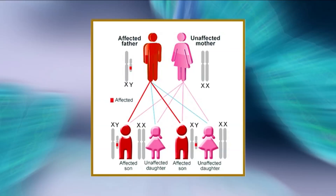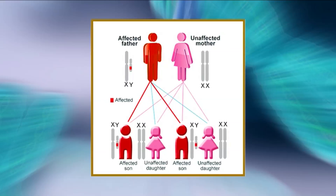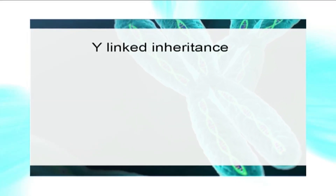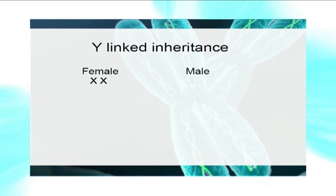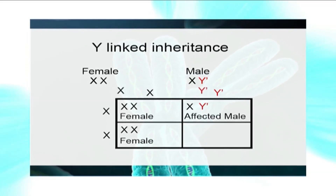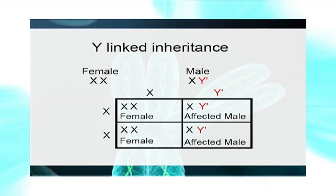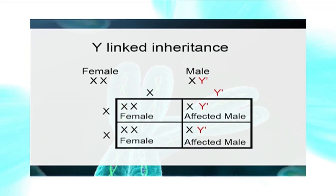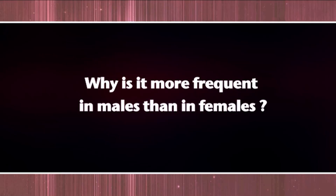Y-linked inheritance passes from father to son since the Y chromosome is always given to male offspring. All sons of an affected father have the trait. Drawing a Punnett square for this inheritance: the female donates the X chromosome and the male donates the Y chromosome to a male offspring. Therefore, the Y chromosome will be passed only to male offspring, which explains why Y-linked traits are more frequent in males than in females.